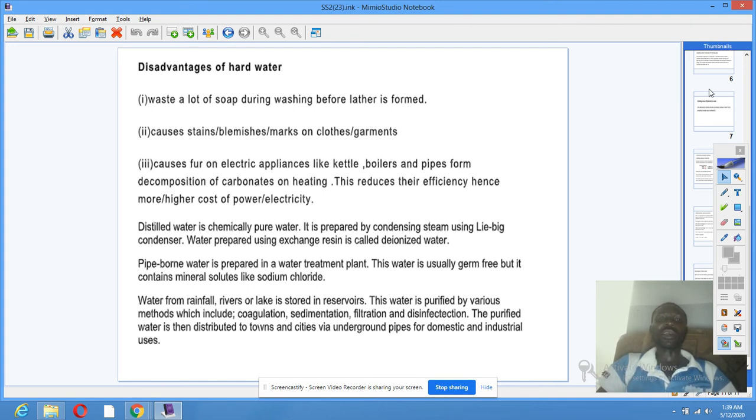Pipe water is prepared in water treatment plants. This water is usually germ-free, but it contains mineral salts like sodium chloride.